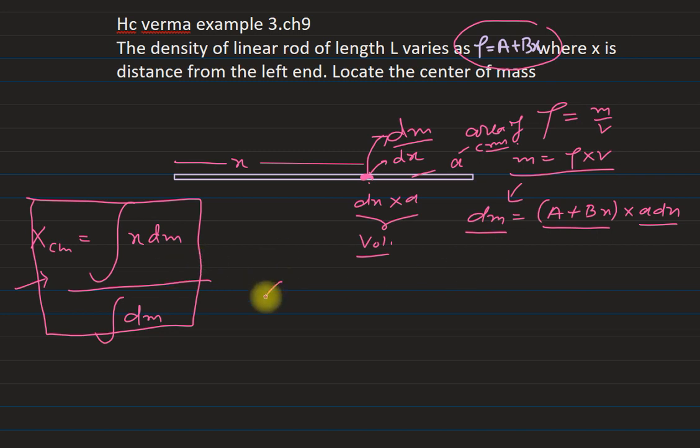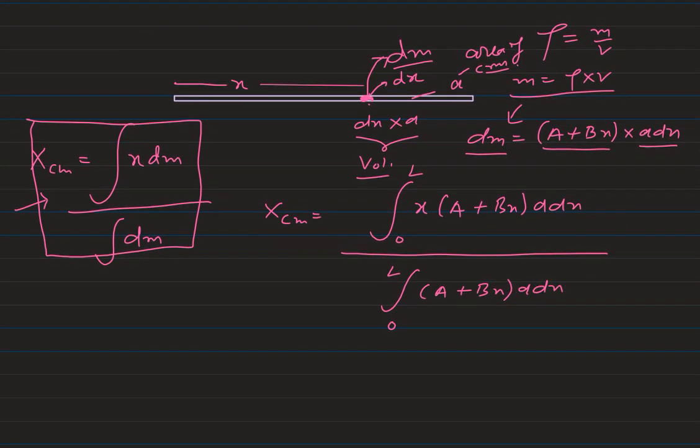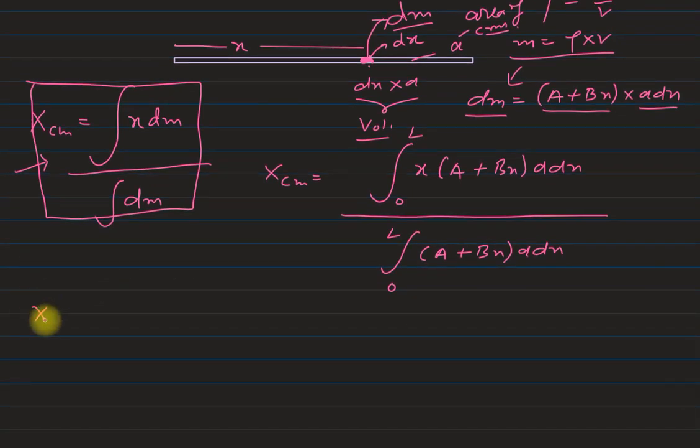And now we put dm in the given expression and calculate the center of mass. So it is x, x is the position from the left end of this dm. So it is x into (a + bx). We have dm = (a + bx)α dx. And these elements are from, in this entire rod, from 0 to L. So we have to integrate from 0 to L. And similarly here, we also integrate from 0 to L to get the total mass of the rod. So dm's value is (a + bx)α dx.